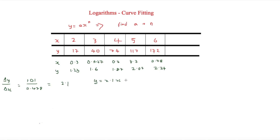We now know that n equals 2.1, since n is just the gradient. To find a, we need to find c first, because log a = c. To find c, we substitute one of our logged data points back into y = mx + c.